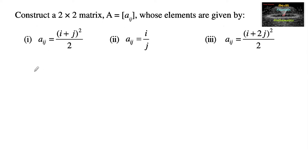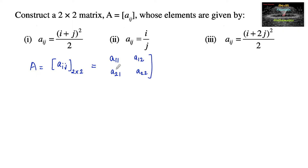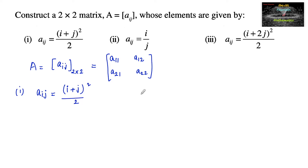Construct a 2 by 2 matrix A equal to Aij. A 2 by 2 matrix has 4 elements: a11, a12, a21, and a22. For the first case, the element of the matrix is given as Aij equals (i plus j) whole square upon 2. We need to find the four elements, starting with a11 which is equal to (1 plus 1) whole square upon 2.